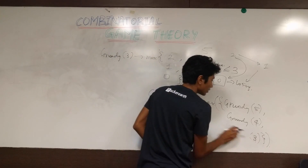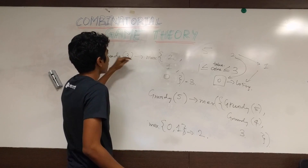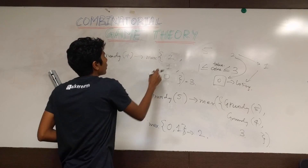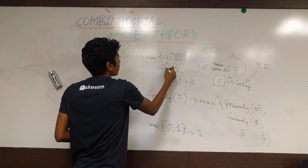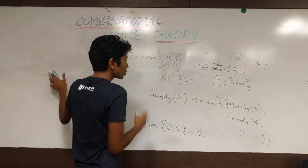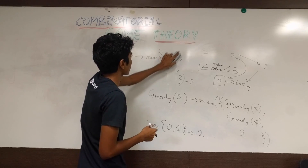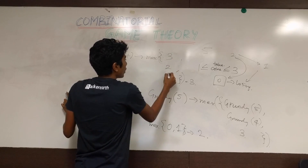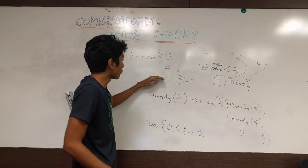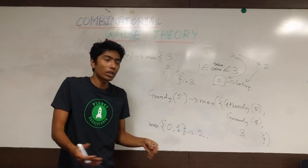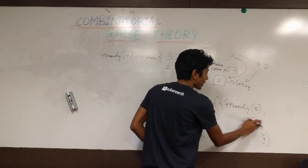Grundy of 4 is MEX of {Grundy(3), Grundy(2), Grundy(1)} = MEX of {3, 2, 1}. Interestingly, while it might seem like the answer is 4, the integer 0 is missing from this set. So the smallest number not in {3, 2, 1} is 0. Grundy of 4 turns out to be 0.